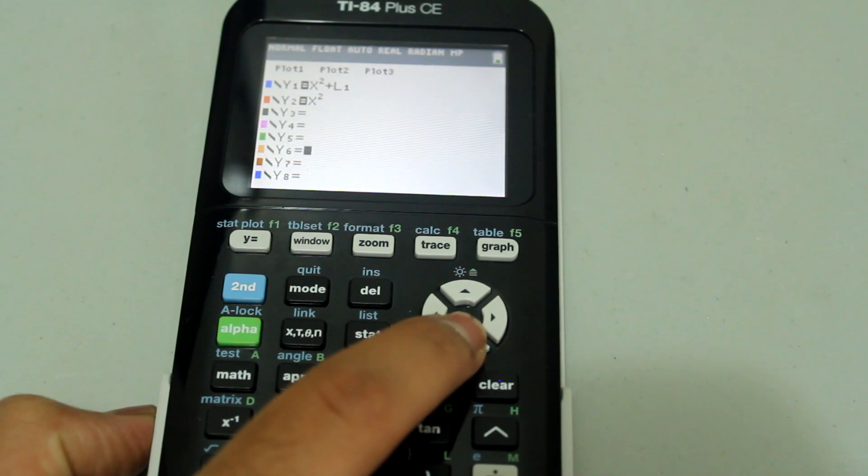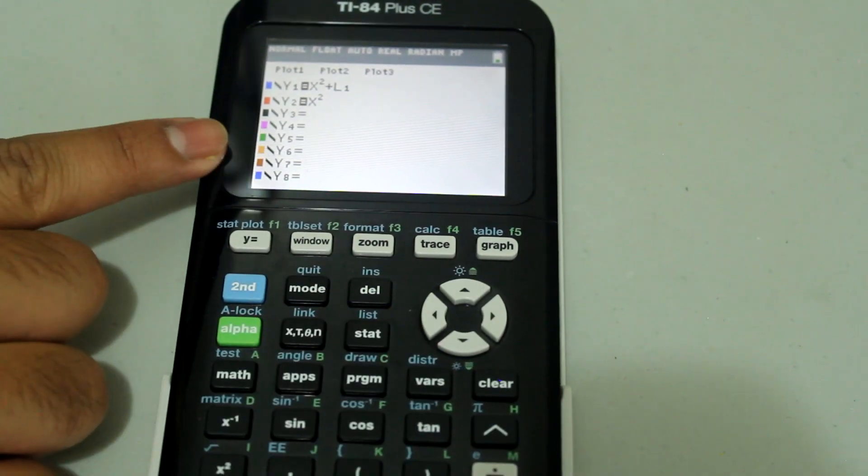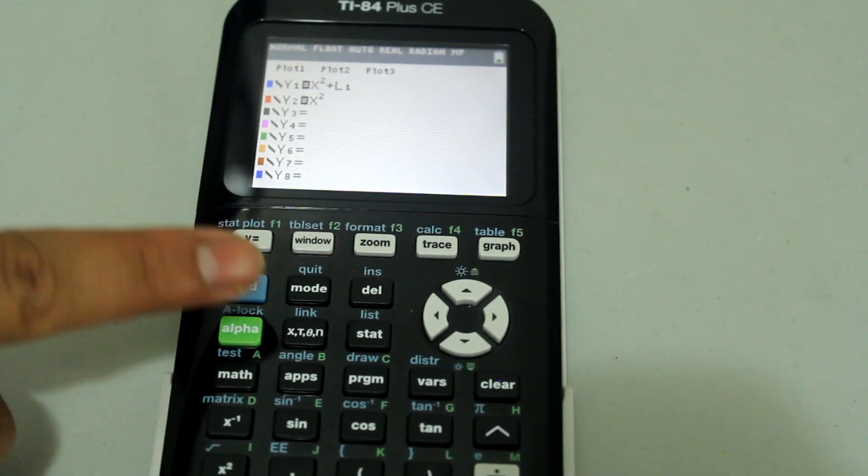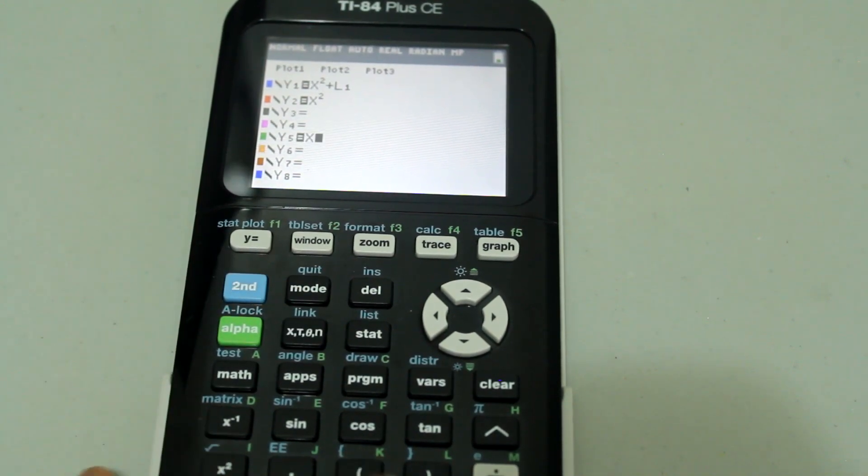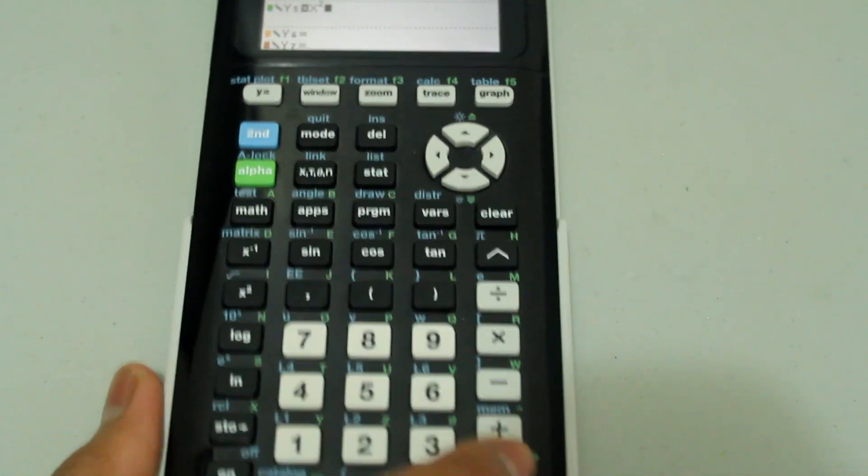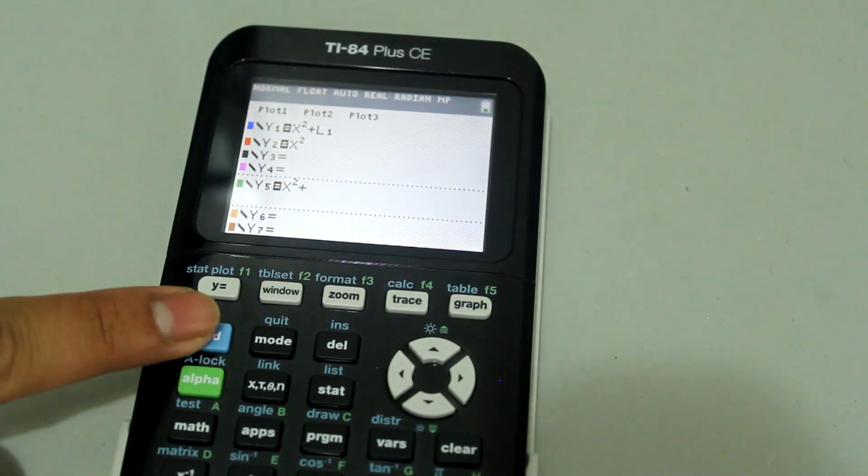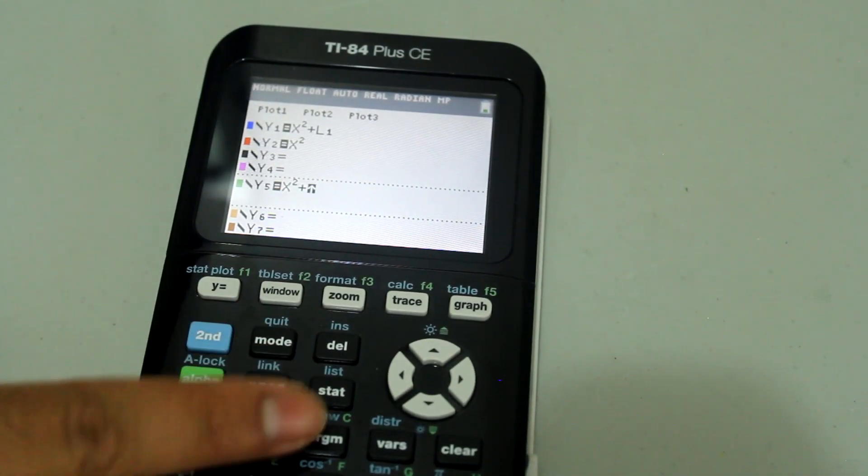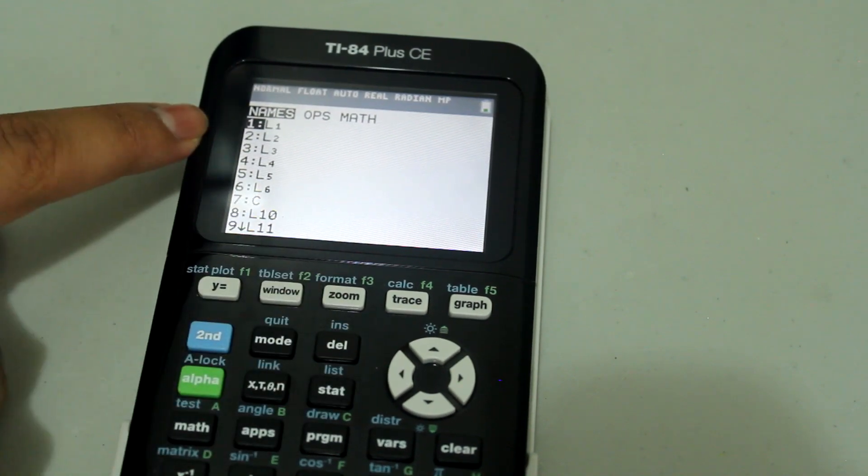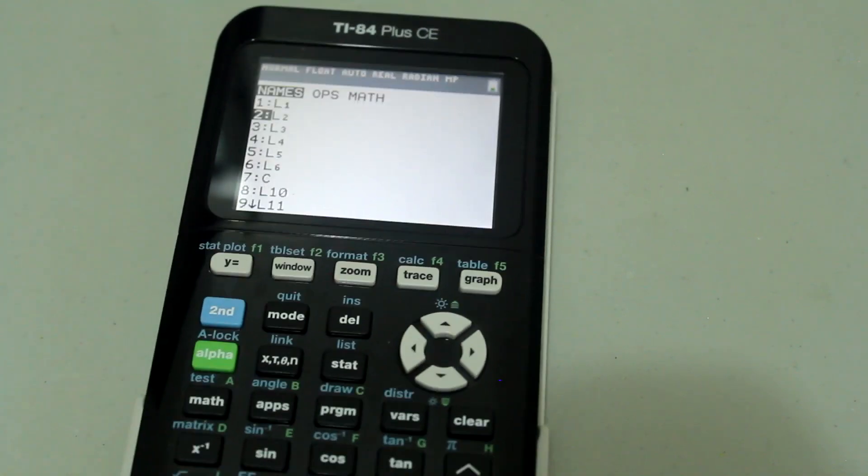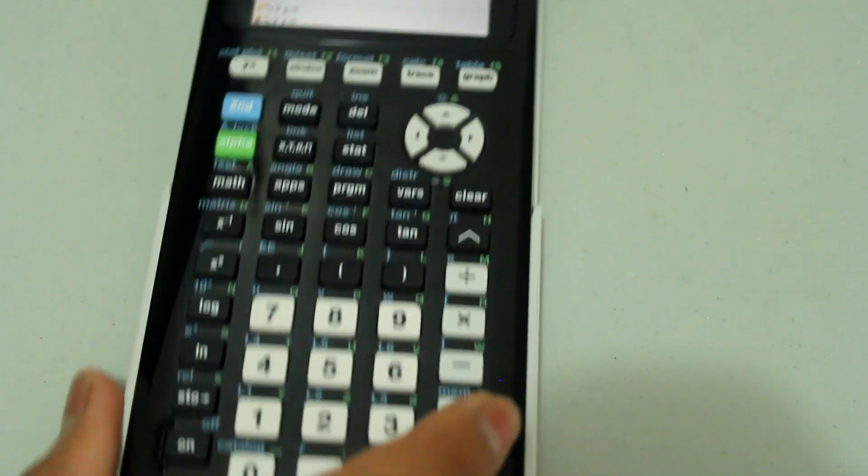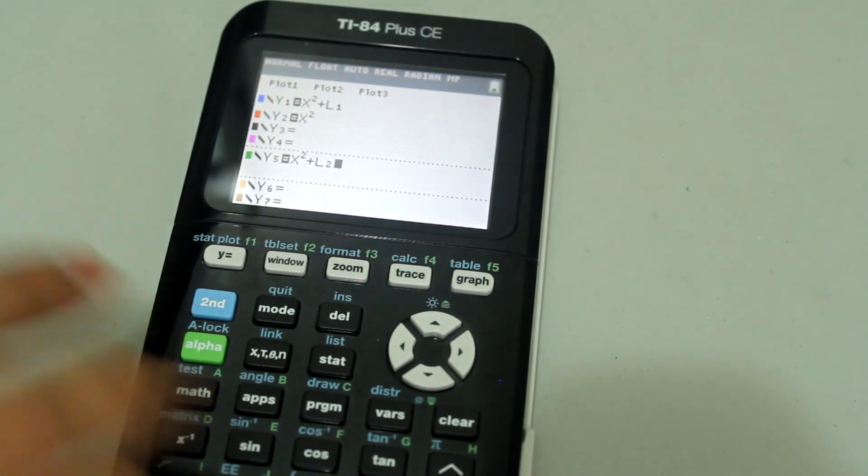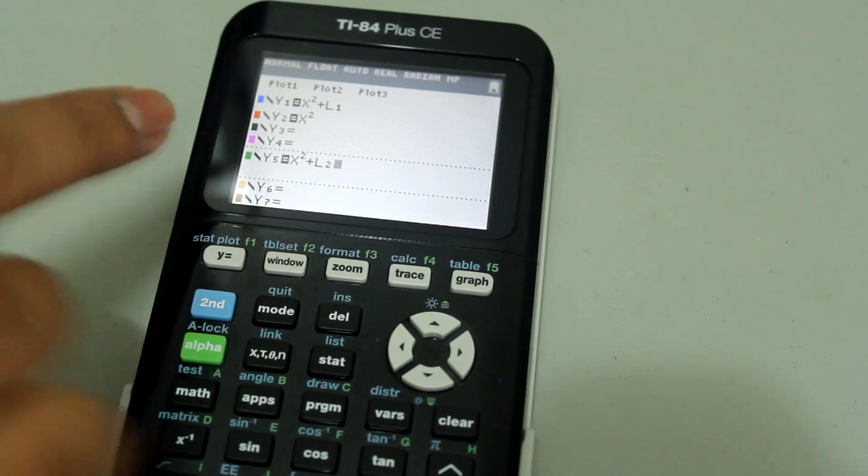I'm going to go down to y5 equals simply because I want the green color and I'm going to type in x squared plus and now second, stat and select L2. Just arrow down and press enter and now y5 equals x squared plus L2.